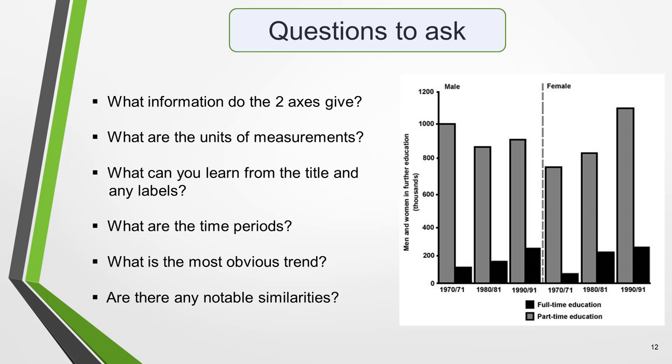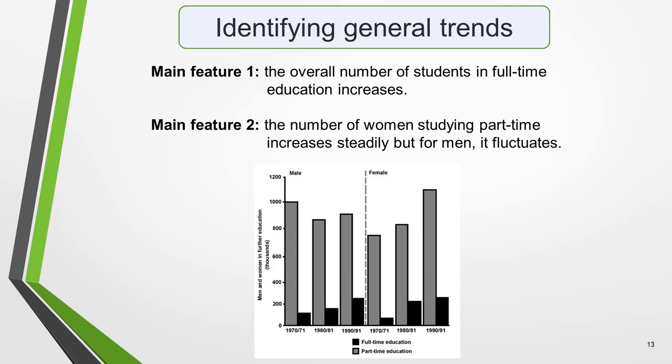Here are some useful questions to ask for both bar charts and line graphs: What information do the two axes give? What are the units of measurement? What can you learn from the title and any labels? What are the time periods? What is the most obvious trend? What are the most notable similarities or differences? Two general trends in this graphic are — Main Feature 1: the overall number of students in full-time education increases. Main Feature 2: the number of women studying part-time increases steadily, but for men it fluctuates.